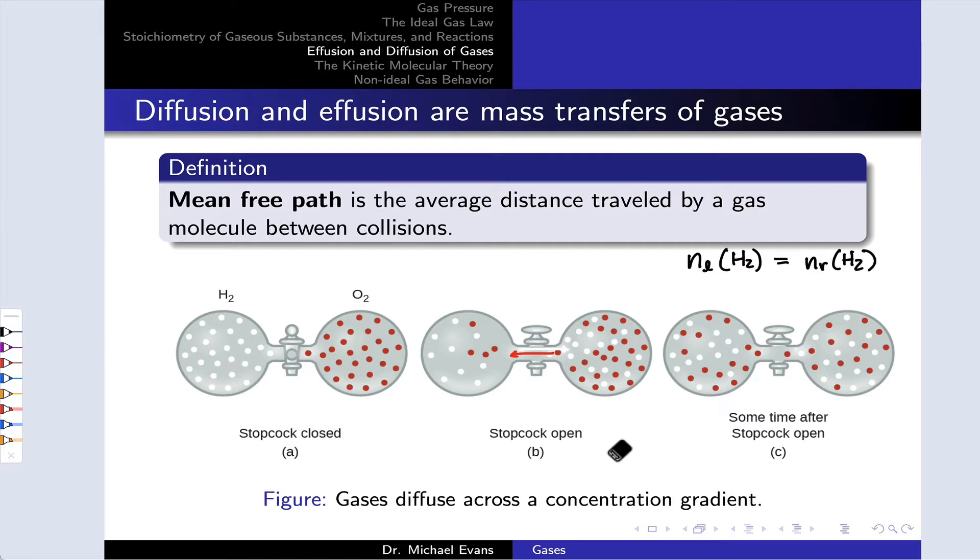So the number of moles of hydrogen on the left equals the number of moles of hydrogen on the right, and the same is true of the oxygen. This is diffusion. The red and white gases diffuse into one another so that they end up equal in concentration in both containers. Gases do this on their own spontaneously. They expand to fill the volume accessible to them.